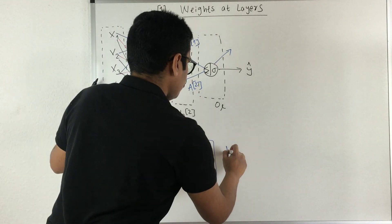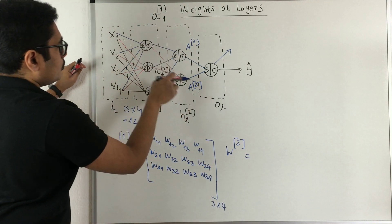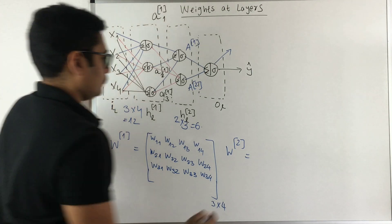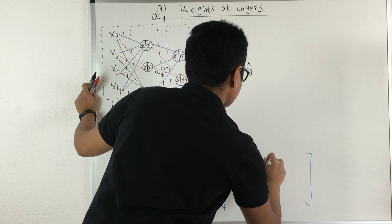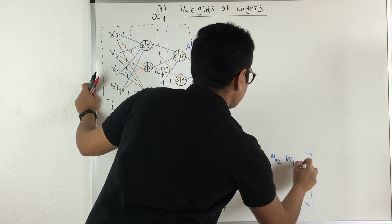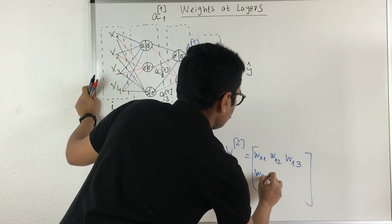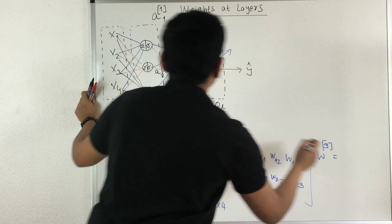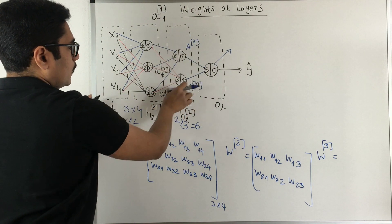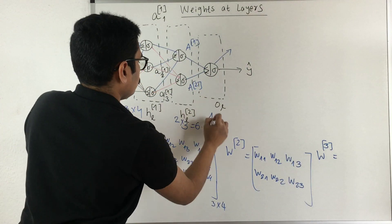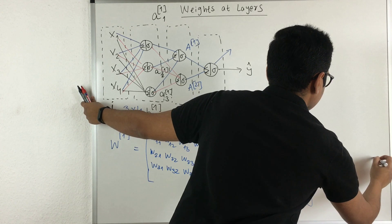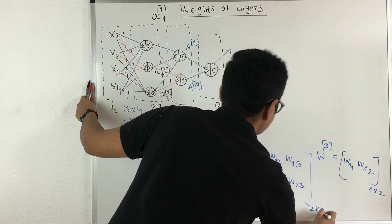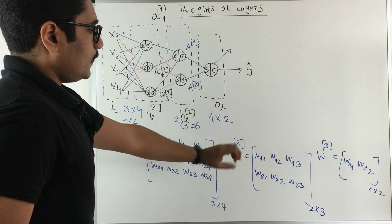Similarly, for the weight matrix W2 at the second layer — between the first hidden layer (3 units) and the second hidden layer (2 units) — you get a 2×3 matrix: [w11, w12, w13] and [w21, w22, w23], which is two rows and three columns.